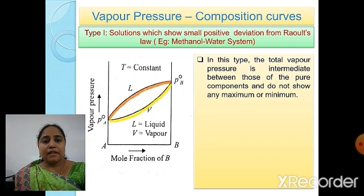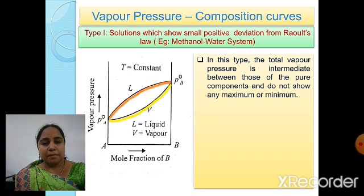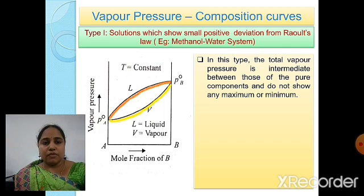The yellow curve, or V-curve, indicates the variation of vapor pressure with vapor composition. It is very important to note: the L-curve indicates variation of vapor pressure with liquid composition, and the V-curve indicates variation of vapor pressure with vapor composition.